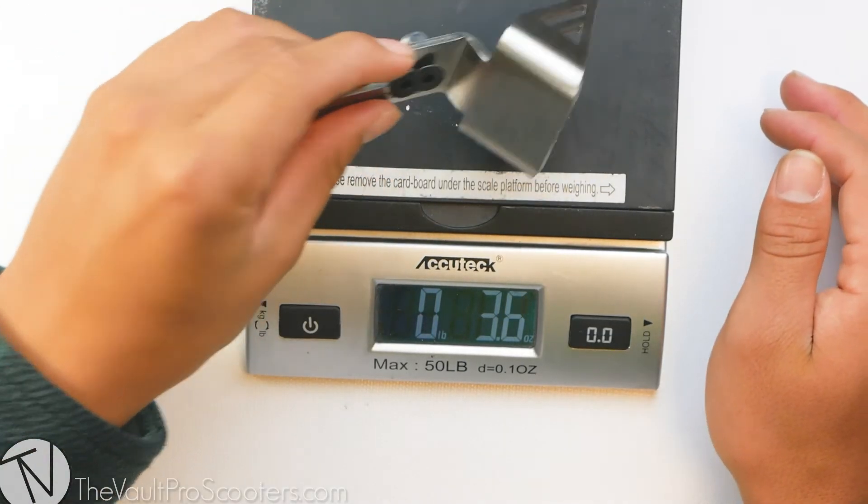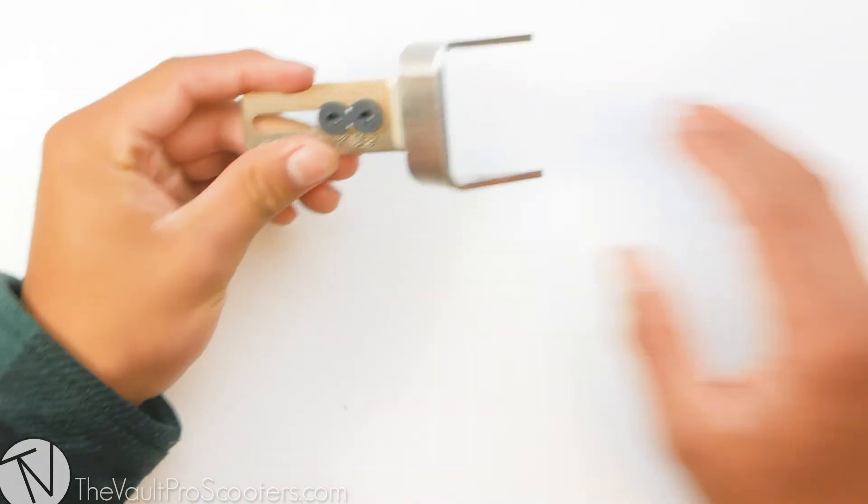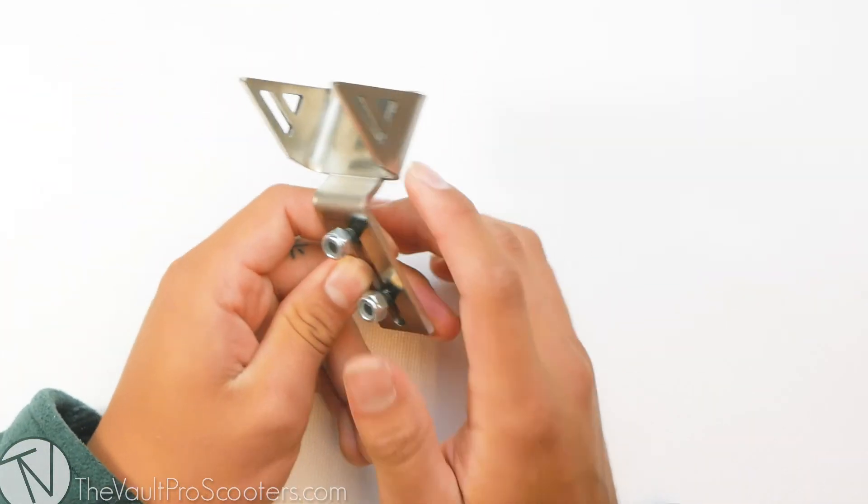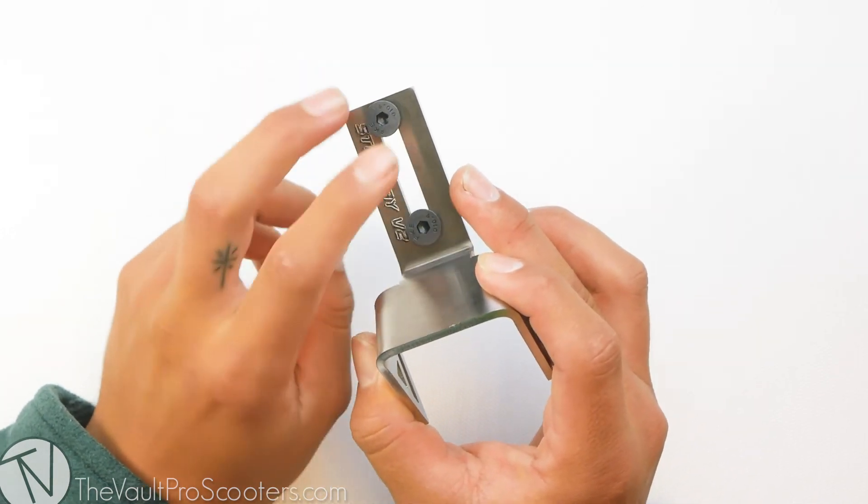Alright, with hardware it comes in at 3.7 ounces, definitely light for a fender. Like I said, with the cutouts on the side of the wings it's helping it stay light and with the slit in the middle where the brake bolts are.